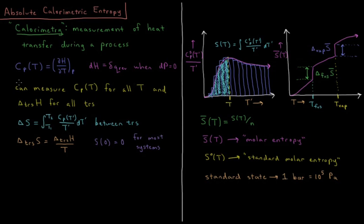We need to find what the constant pressure heat capacity is at all temperatures between T1 and T2. We can use calorimetry to measure the constant pressure heat capacity for all temperatures and measure the heat of transition for all phase transitions. Then using that, we can perform these integrals and get all the values that we want.